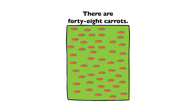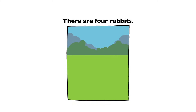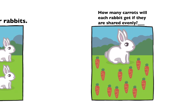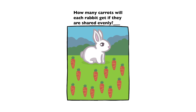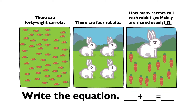There are 48 carrots. There are 4 rabbits. How many carrots will each rabbit get if they are shared evenly? 12. 48 divided by 4 equals 12.